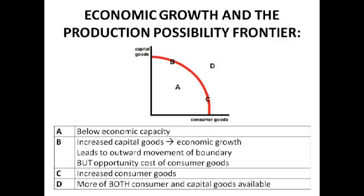We've seen the PPB diagram — at point A, we're below economic capacity because we have the ability to produce much more if we reach the frontier itself. At point B, we are producing much more capital goods, which means the materialistic standard of living may not be as high short-term, but an increase in capital goods means that in the future we'll have a greater capacity to produce more consumer goods. Short-term the opportunity cost is consumer goods, but long-term we'll produce more goods and services, potentially at better quality and lower average cost.